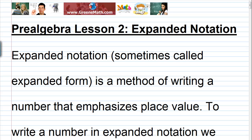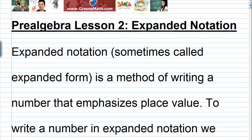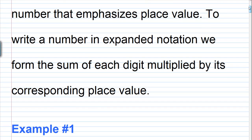In this lesson we're going to talk about expanded notation. Expanded notation, which is sometimes called expanded form, is a method of writing a number that emphasizes place value. To write a number in expanded notation, we form the sum of each digit multiplied by its corresponding place value.